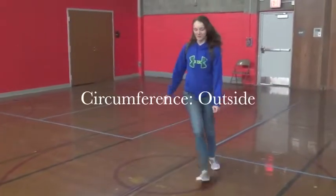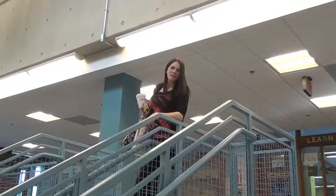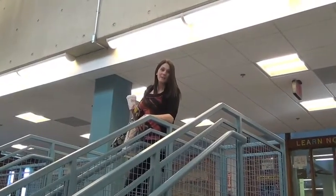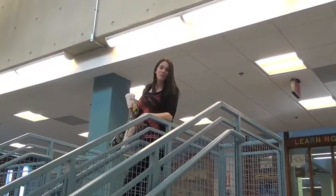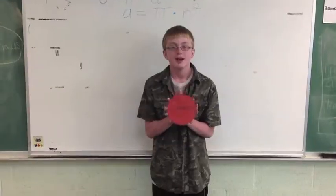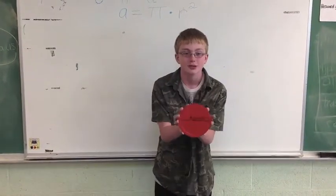Circumference is the distance around a circle. A radius is a line segment from the center of a circle to the edge. The diameter is the distance across the circle.